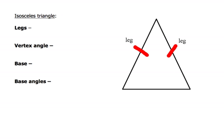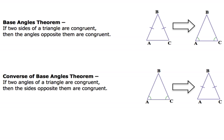Let's take a look at the isosceles triangle. The isosceles triangle has two legs, and at the top where those two legs come together and share a common vertex, that's called the vertex angle. The other side of the triangle that's not one of the two legs is called the base. And the two angles at the bottom are called the base angles. So we have three angles total: one vertex angle and two base angles. That brings us to the base angles theorem.